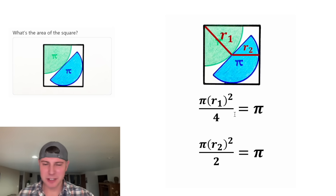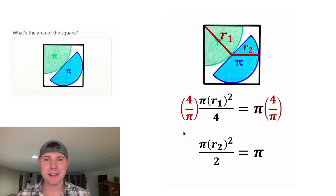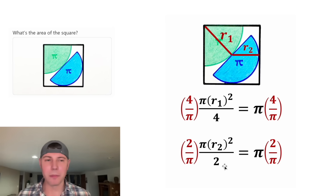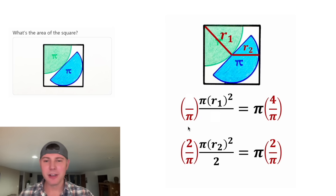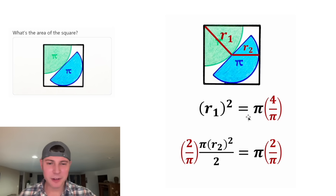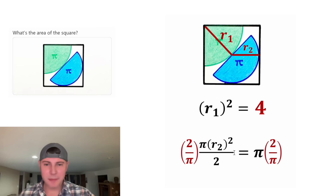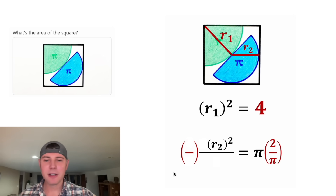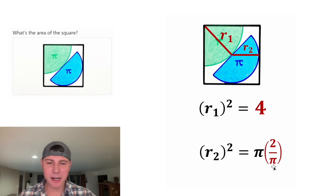Now we can clean these up. Let's multiply both sides of the top equation by the reciprocal of pi over four, which is four over pi. And on this one, let's multiply both sides by the reciprocal of pi over two, which is two over pi. The reason we use the reciprocal is because these fours cancel each other out and the pis cancel each other out. So on the left-hand side we just have r1 squared, and on the right-hand side the pis cancel, leaving us with four. Same thing on the bottom equation: the twos cancel and the pis cancel, leaving us with r2 squared equals two.